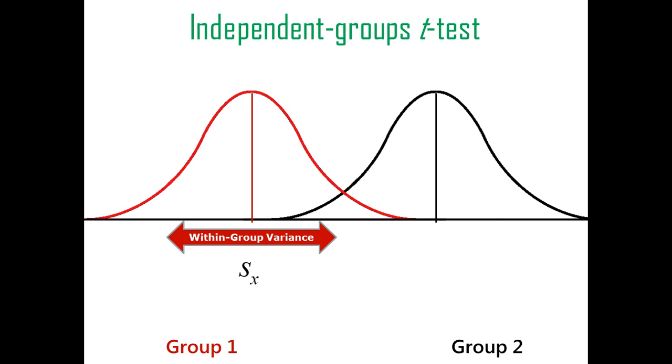You have to take into account the variance of group one and the variance of group two. Let's call that within group variance, because it's no good to just say that the means are different. The means could be a certain amount different, but if there's a ton of variability within each sample, then maybe that mean difference doesn't mean much.